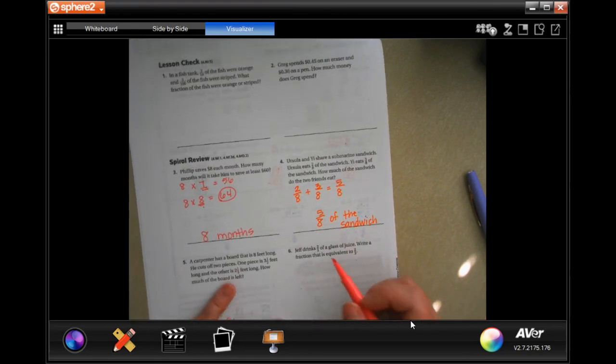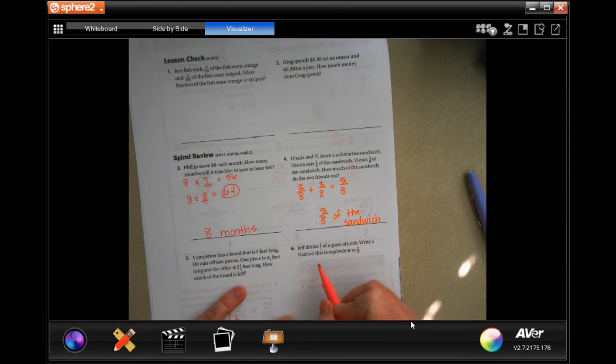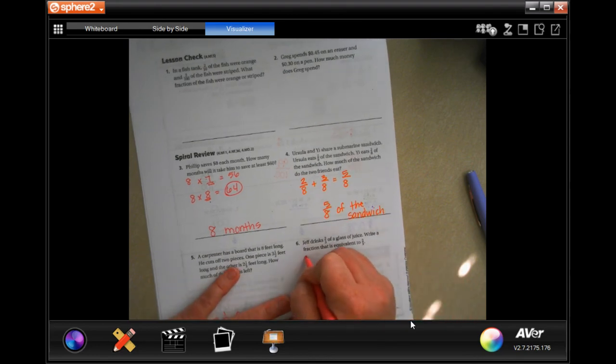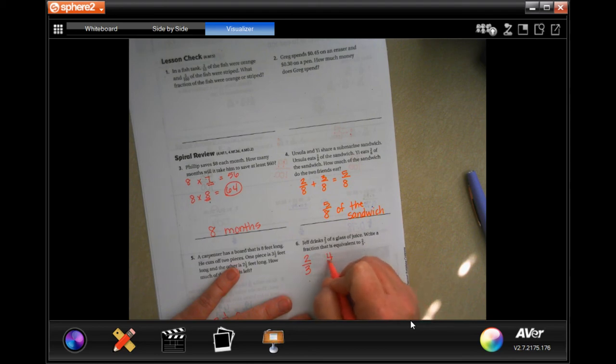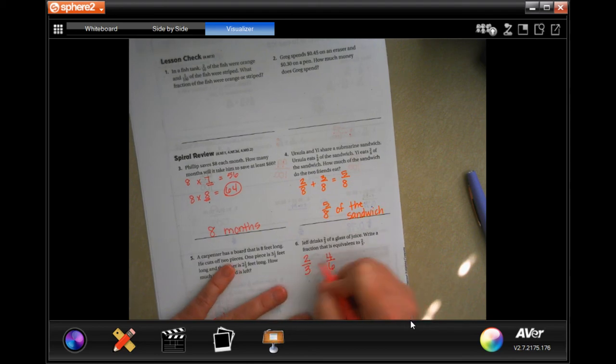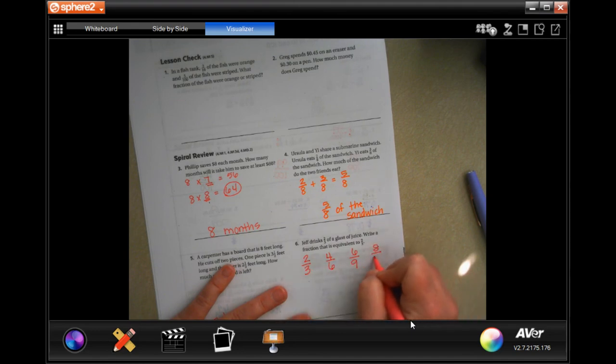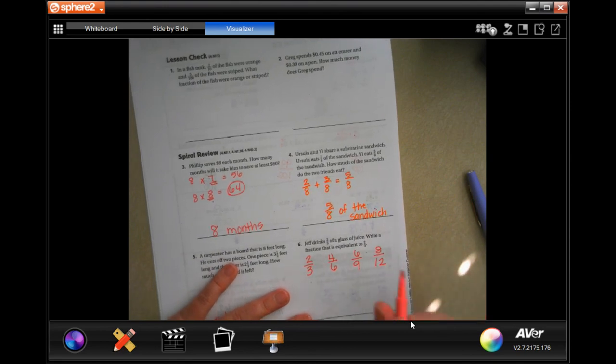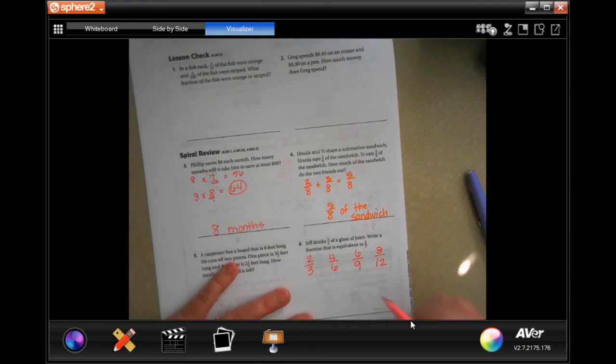Jeffrey drinks 2/3 of a glass of juice. Write a fraction that's equivalent to 2/3. Well, 2/3, if we multiply the top and the bottom by 2, we would get 4/6. If we multiply that by 3, we would get 6/9. If we multiply it by 4, we would get 8/12. So, any of those. You can keep going. You can multiply it by 5. You can multiply it by 20 for all I care. You just have to do the same to the top and the bottom.